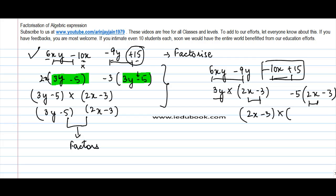So I can write 2x minus 3 into 3y - this number flows in here - minus 5, and this is equal to this. So whether you do it this way or you do it the other way around, in both the cases you will land up with the same factors.